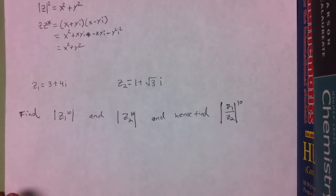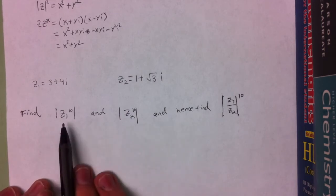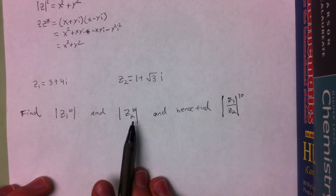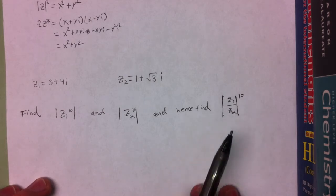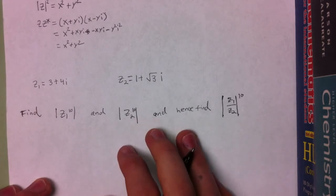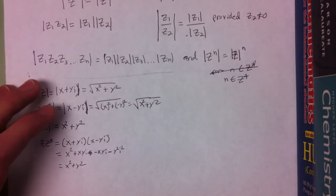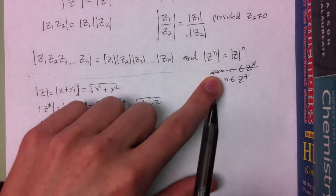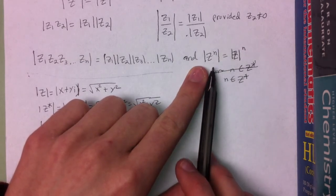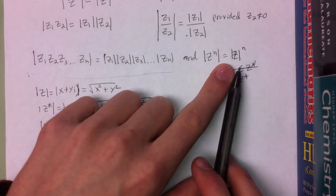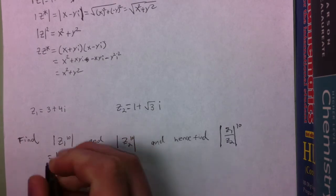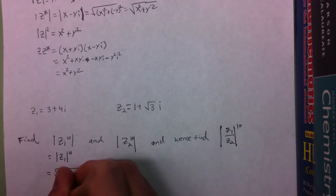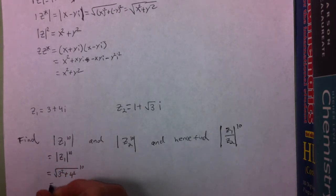We're going to do two examples. We're told to find the modulus of z sub 1 to the 10th and z sub 2 to the 10th, and hence find the modulus raised to the 10th power of z sub 1 over z sub 2. From the property which says that the modulus of a complex number raised to the 10th power equals the modulus of the complex number, raised to the 10th power, the modulus of z sub 1 to the 10th is equal to the square root of 3 squared plus 4 squared, to the 10th power, which is the square root of 25 to the 10th, which is 5 to the 10th.